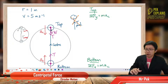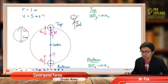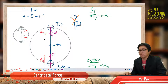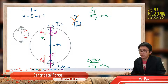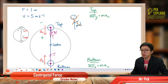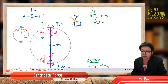At the top, we have weight downward and tension pulling downward. The centripetal acceleration is also downward because the center of the circle is at the bottom. So centripetal acceleration is towards the center, which is downward. Going downward is positive, going upward is negative. That means both weight and tension are positive — they follow the acceleration direction. So: tension plus weight equals MAC.